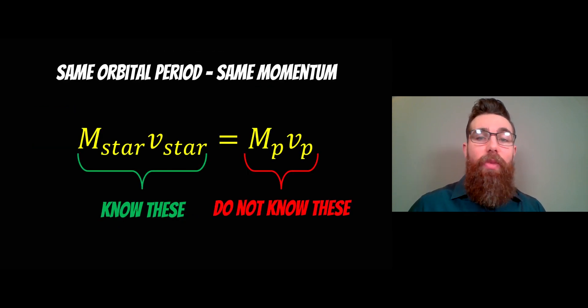If we assume that the exoplanet and the star have the same orbital period, then they're going to have the same momentum. So the mass of the star times the velocity of the star is equal to the mass of the planet times the velocity of the planet.